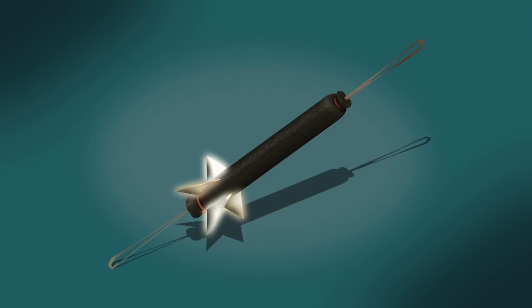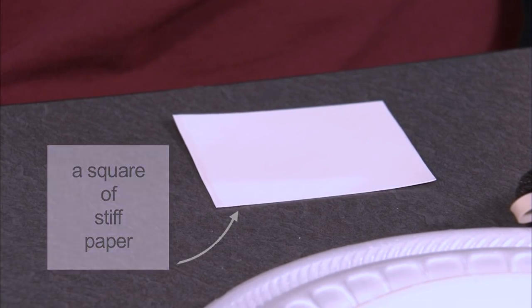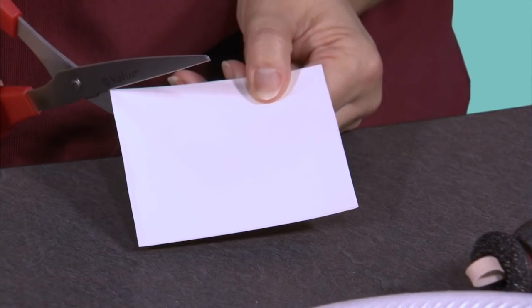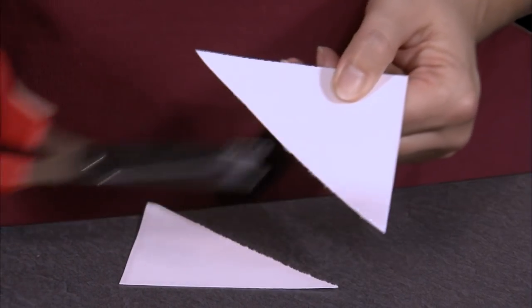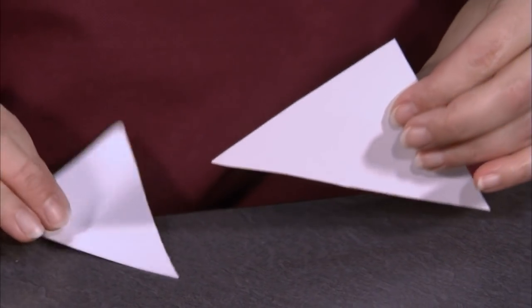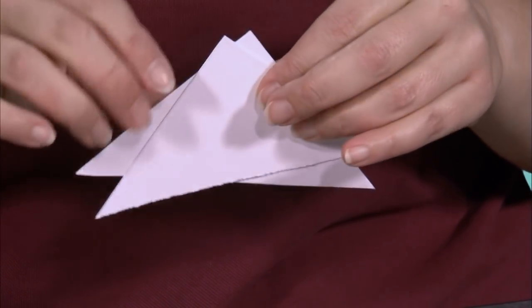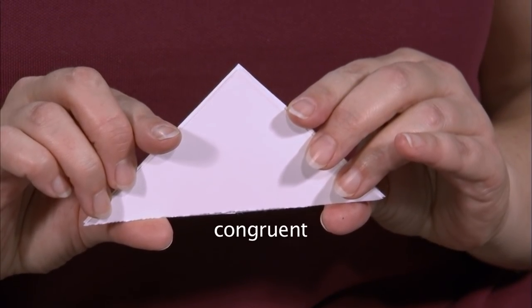Now it's time to work on our fins. The easiest way is to start with a square. You'll need to figure out what size fits your rocket best. My square is about nine and a half centimeters on a side. Cut a diagonal. You then end up with two triangles, and those two triangles should be congruent.